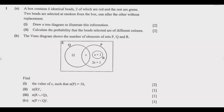Question one: a box contains six identical beads, two of which are red and the rest are green. Two beads are selected at random from the box one after the other without replacement. Draw a tree diagram to illustrate this information, then calculate the probability that the beads selected are of different colors.